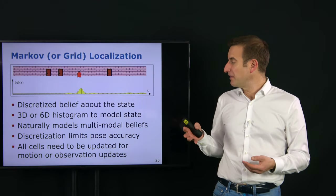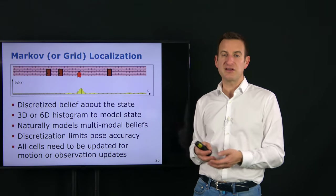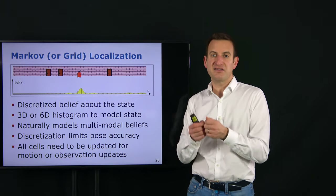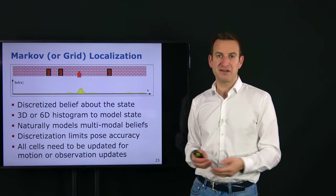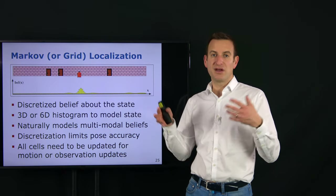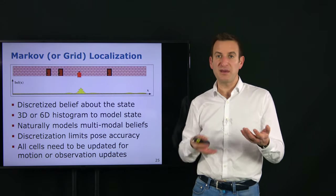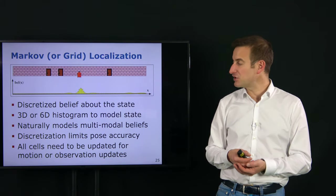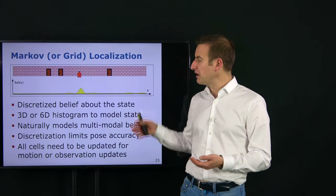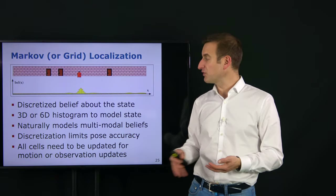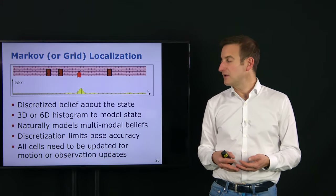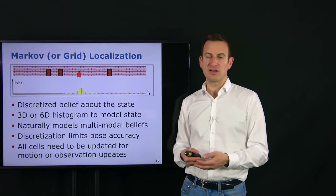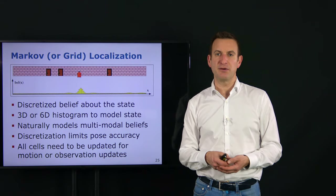However, grid localization has limitations with respect to accuracy — bounded by the cell size, so 5-centimeter cells give at most 5-centimeter localization accuracy. In high-dimensional spaces like 6D, memory constraints prevent fine-grained discretization, which is why this approach is typically not used for full 3D localization. Another downside is that all cells need to be updated upon every motion command or observation, which becomes computationally very costly.